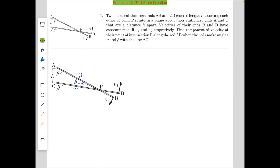Let's begin. Two identical thin rods AB and CD, each of length L, touch each other at point P and rotate in a plane about their stationary ends A and C that are at a distance h apart. Velocities of the ends B and D have constant moduli v1 and v2 respectively. Find the component of velocity of their point of intersection P along the rod AB.